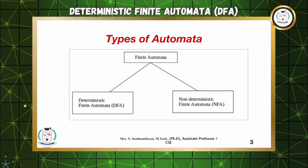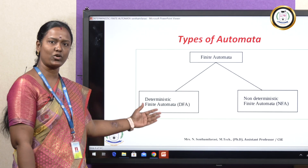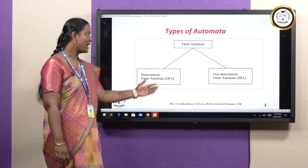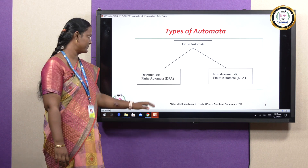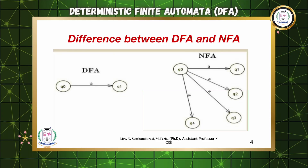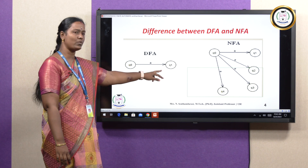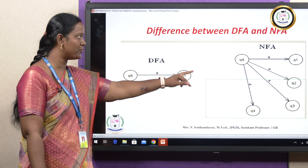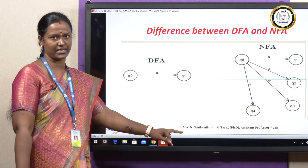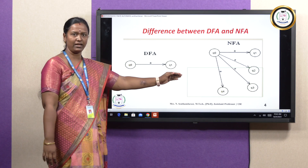What are the types of automata? We have two types: deterministic finite automata, shortly called DFA, and non-deterministic finite automata, shortly called NFA. The major difference is that in DFA, for a single input, it moves from one state to exactly one other state. But in NFA, for a single input, it can move to multiple states.